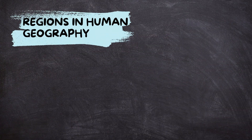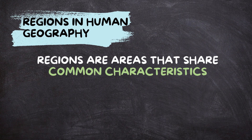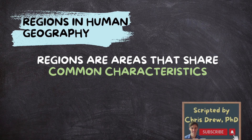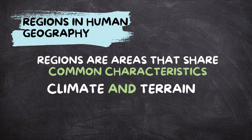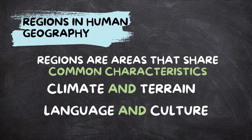In human geography, regions are areas that share common characteristics. These characteristics could be anything from climate and terrain to language and culture. Understanding the different types of regions helps geographers study how people interact with their surroundings and with each other.